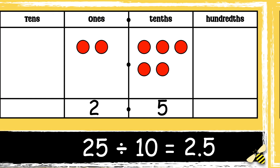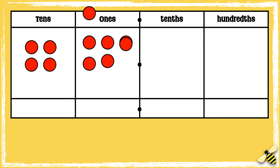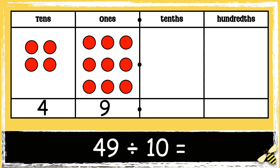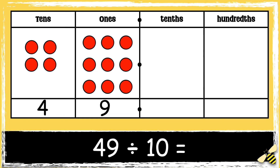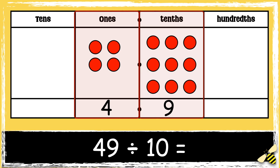Here's another one. Here is the number 49. When we divide two-digit numbers by ten, both digits need to move one place to the right. So nine ones becomes nine tenths and four tens become four ones.